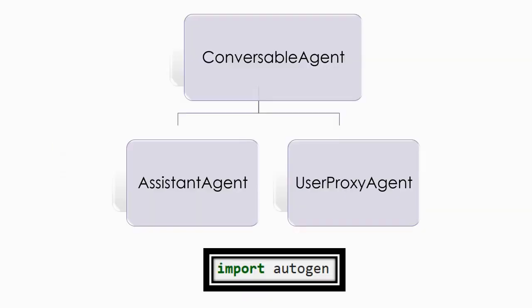To use Autogen, we import it. The base class used is ConversableAgent for agents to converse, and the two basic subclasses we will be using are AssistantAgent and UserProxyAgent. These are the two agents that are going to communicate with one another to get the result that we want.